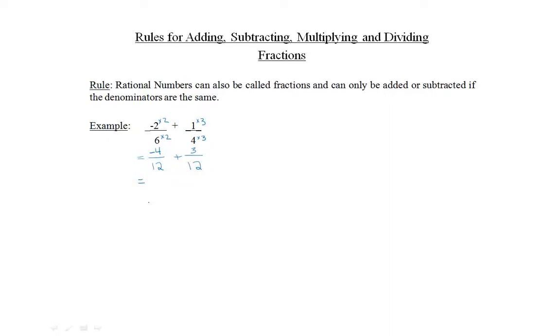Now add negative 4 plus 3, which equals negative 1 over 12. The denominator of 12 stays the same. The final answer is negative 1 over 12.